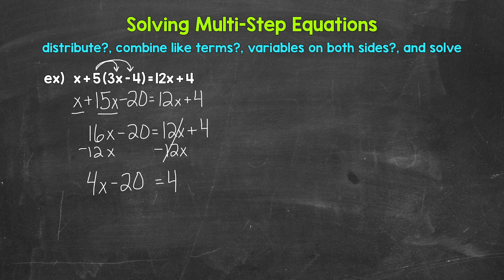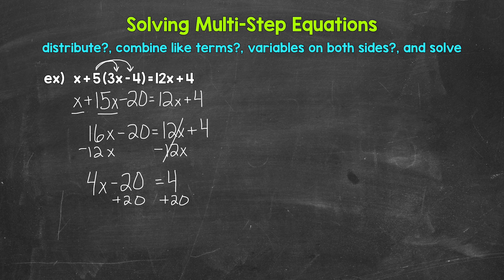Now that we have the variable on one side, we can look to isolate it. We'll use inverse operations in reverse order of operations, so we need to undo the subtraction first. The inverse of subtraction is addition, so let's add 20 to the left side. Whatever we do to one side, we must do to the other, so add 20 to the right side as well. On the left, subtracting 20 and adding 20 cancel each other out, leaving 4x equals. On the right, four plus 20 gives us 24.